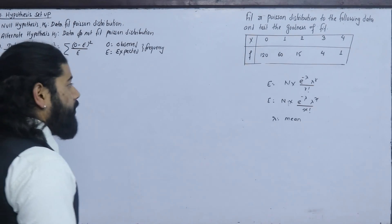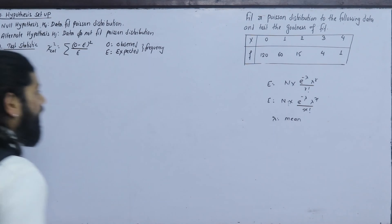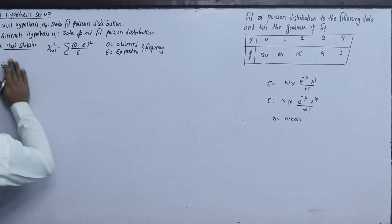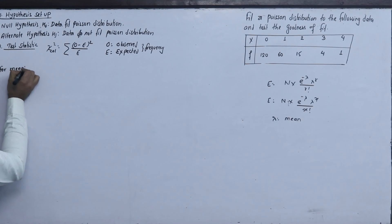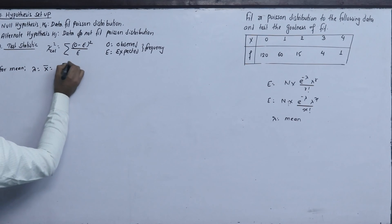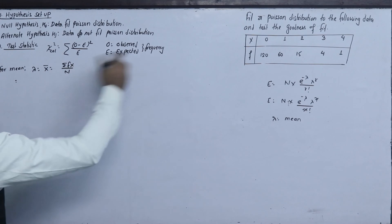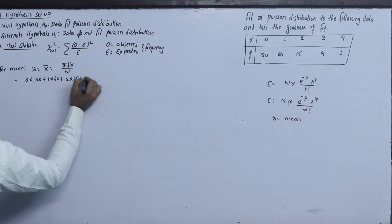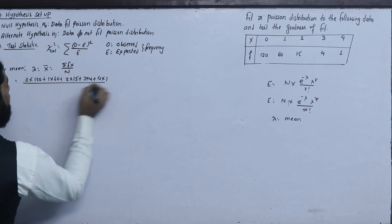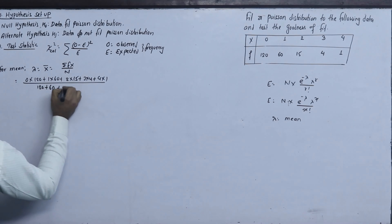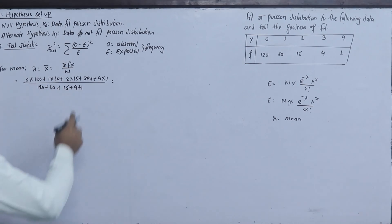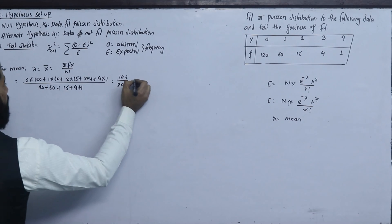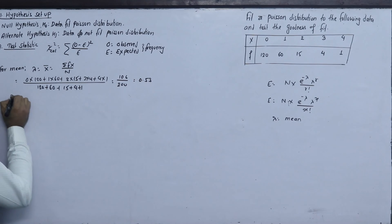To find lambda, we calculate the mean: summation of f·x divided by total n. That gives us: 0×120 plus 1×60 plus 2×15 plus 3×4 plus 4×1, divided by 200, which equals 106 divided by 200 equals 0.53. So lambda equals 0.53.